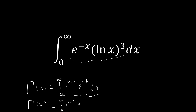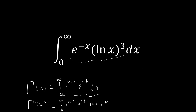So it becomes t to the x minus one times e to the negative t times ln t, because the derivative of anything to the x is that thing to the x times the natural log of the base. If we differentiate again we get ln t squared, and a third time gives ln t cubed. This looks just like our original integral — the only thing missing is the t to the x minus one, which disappears when we set x equal to one. So our original integral I equals the third derivative of the gamma function evaluated at x equals one.